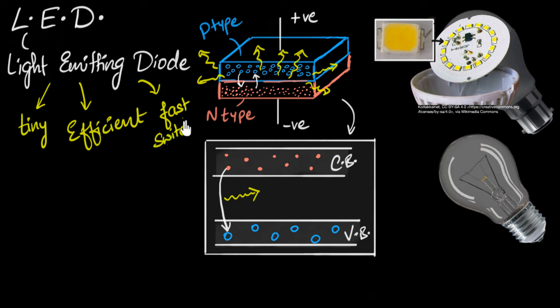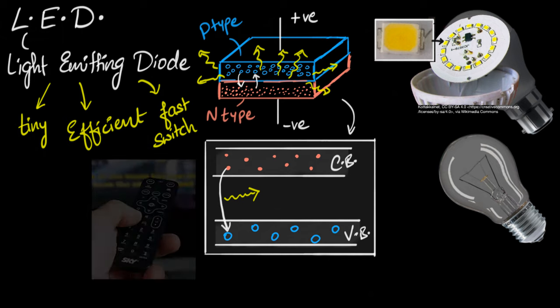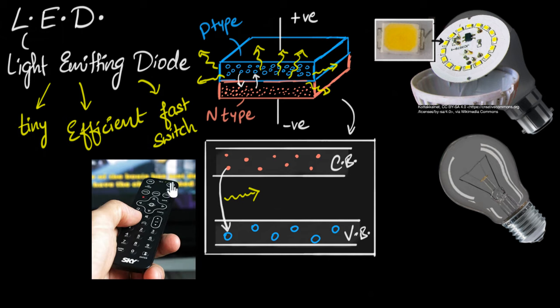Now you may be thinking, why should I care about fast switching? Well, that is super important when you want to communicate using light. Let me give you a very common example that you might be familiar with, your TV remote. How do you think your remote communicates with the TV? The way it happens is there is a tiny LED inside. And every time you press a button, the LED switches on and off in a particular fashion. So pulses are sent to your TV.